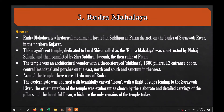Around the temple there were eleven shrines of Rudra. The eastern ghat was adorned by beautifully carved toranas with a flight of steps leading to the Saraswati river. The ornamentation of the temple was exuberant, shown by the elaborate and detailed carvings of the pillars and the beautiful toranas, which are the only remains of the temple today.